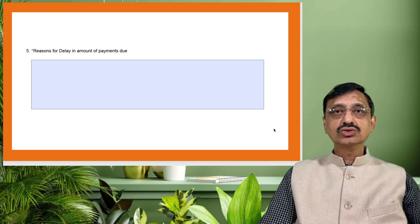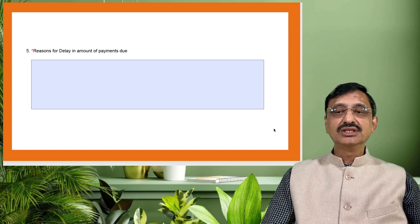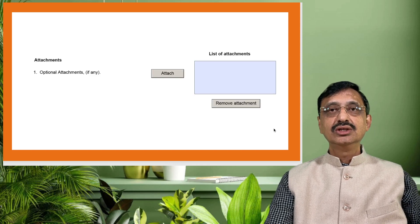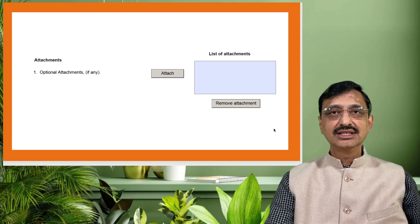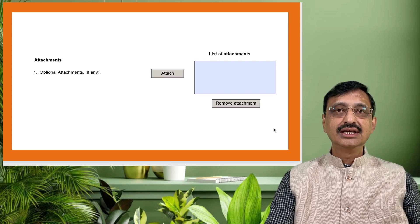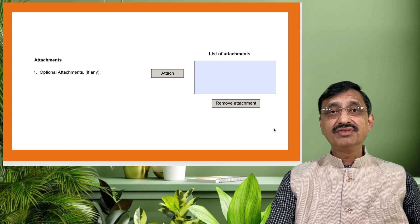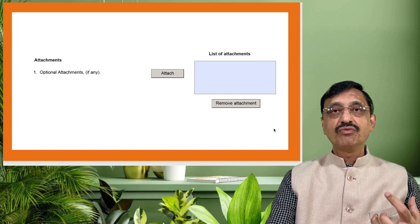For all those entities to whom the payment is due, in point number five of the form you have to mention the reason for the delay in payment. You have to mention the amount of payments due, and you can give this information in a format of your choice as an optional attachment.